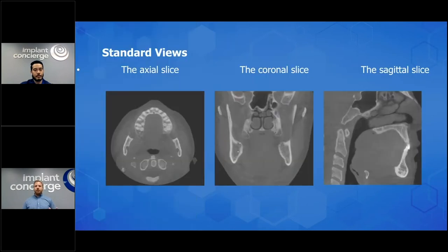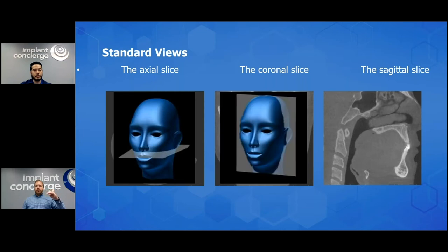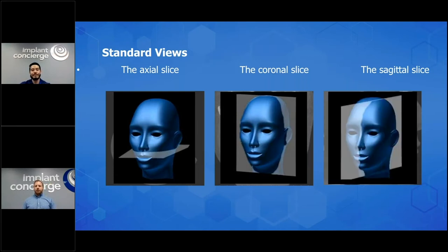To keep everybody on the same page — once you take a scan, this is the multi-planar view you're going to have: axial, coronal, and sagittal. Your axial is parallel to the floor, your coronal is parallel to the front of the face going front and back, and your sagittal is left and right, with the mid-sagittal line right in the center.